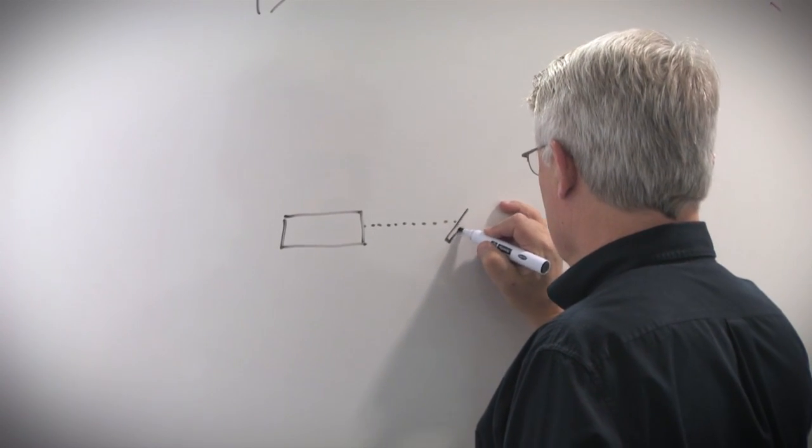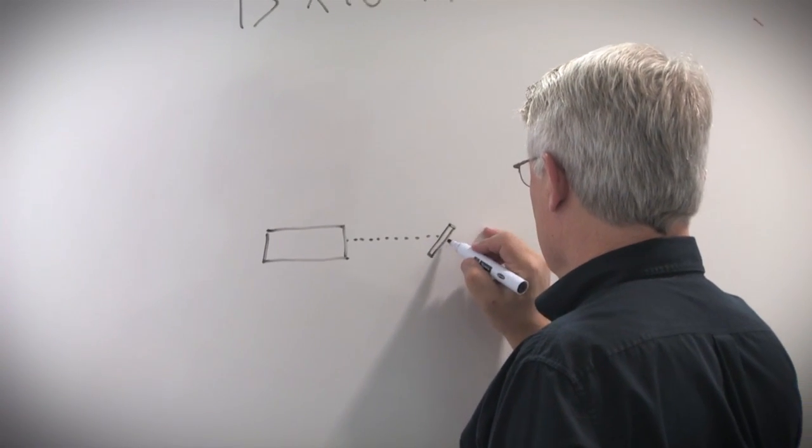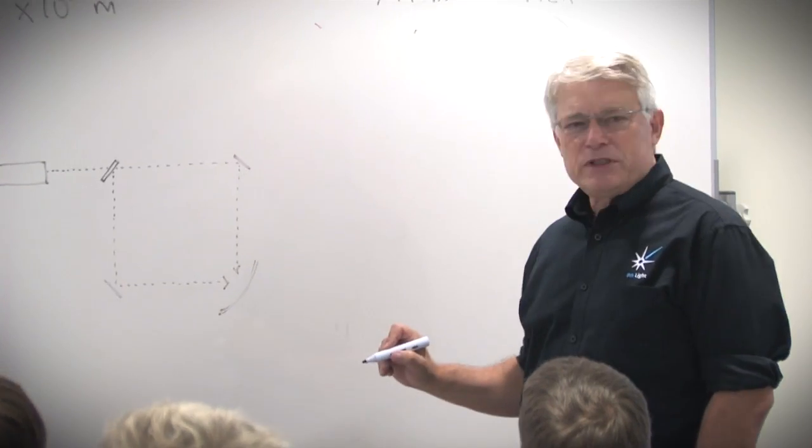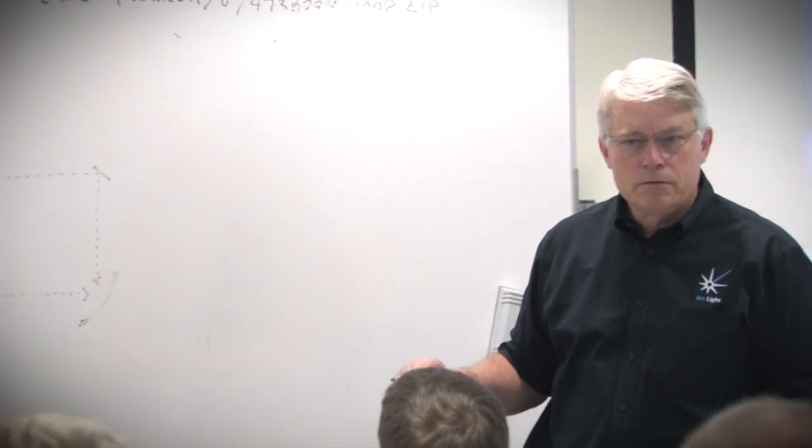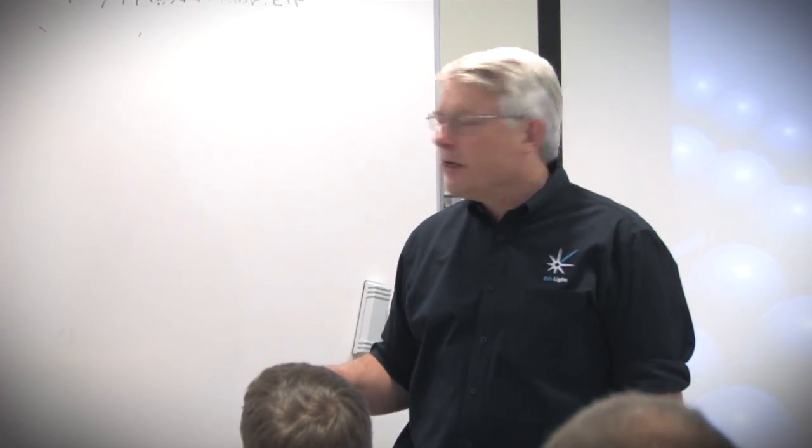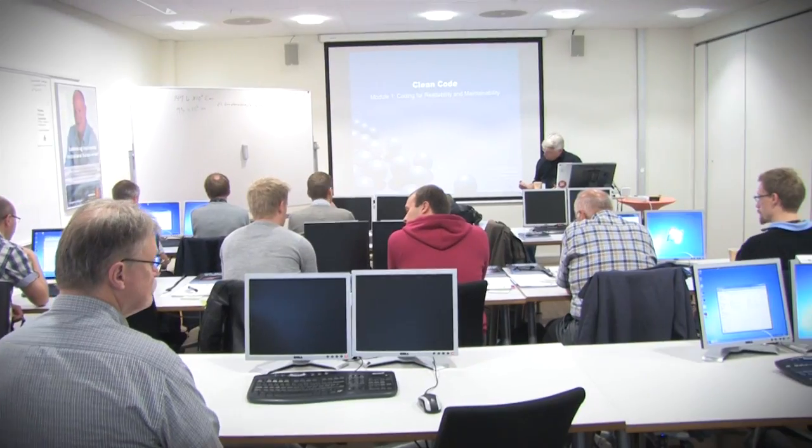I'm a software developer and I began as an architect, so I would like to get to know more about Agile architecture and design. I've been interested in software development for about 20 years, involved in Agile methods, and Robert Martin is probably one of the best in the field. I'm trying to formalize and extend some of my knowledge basically.